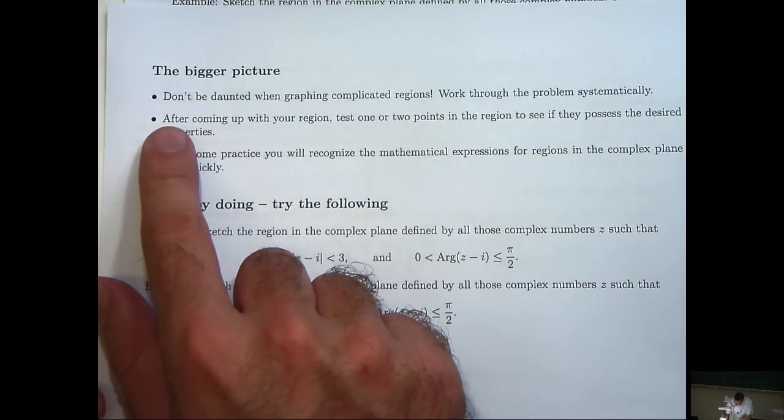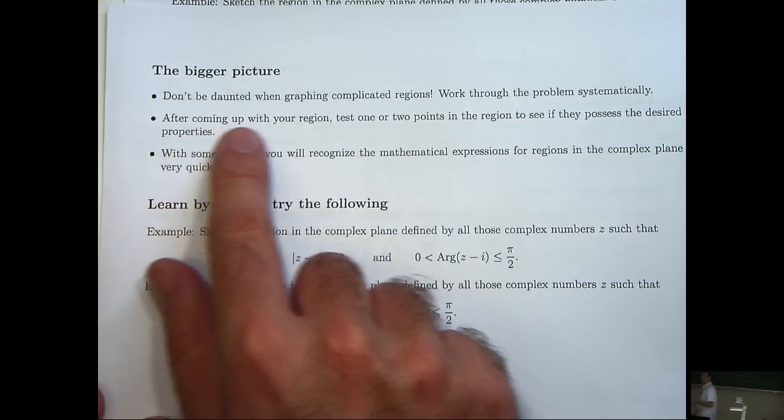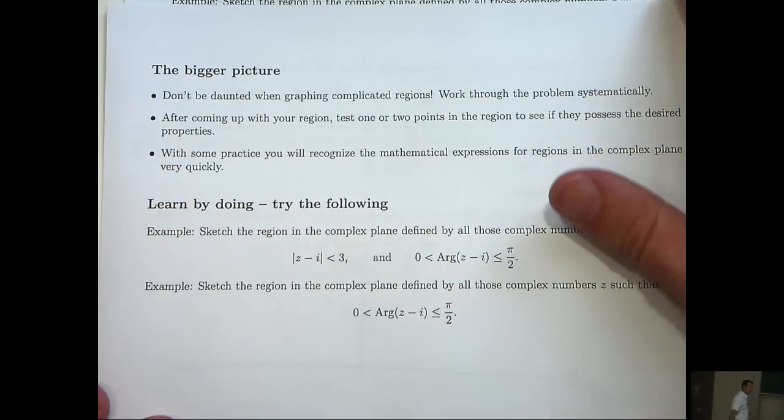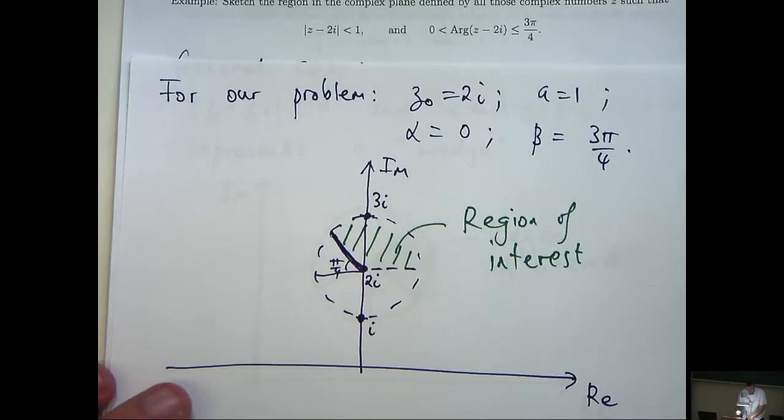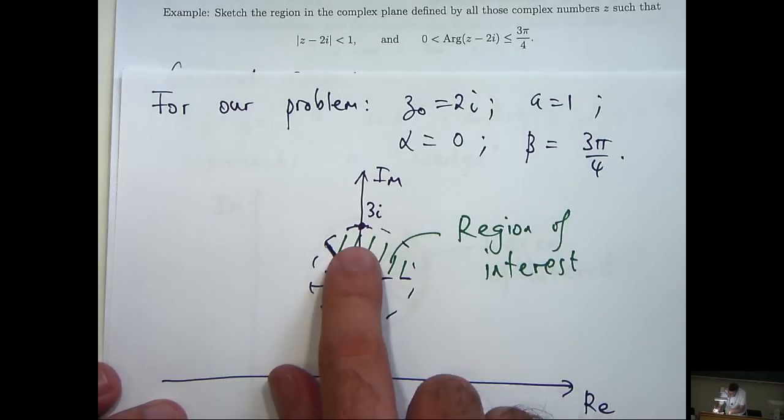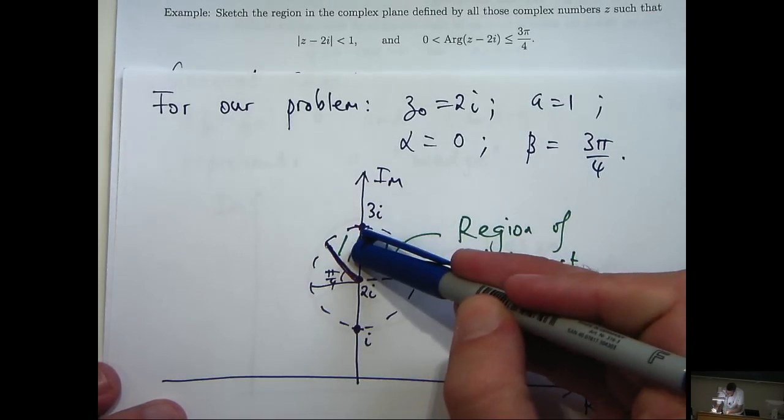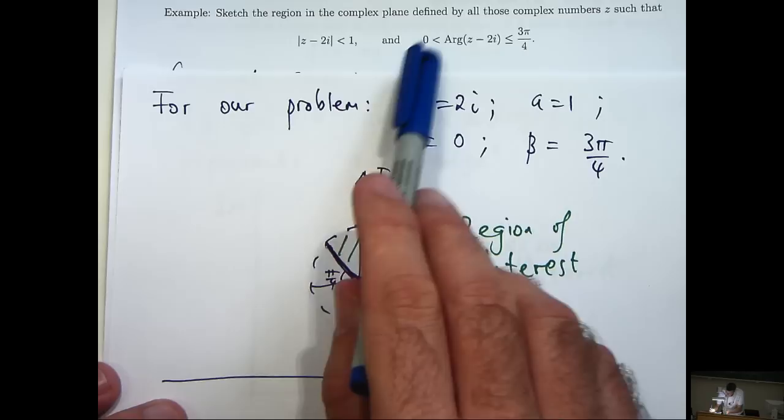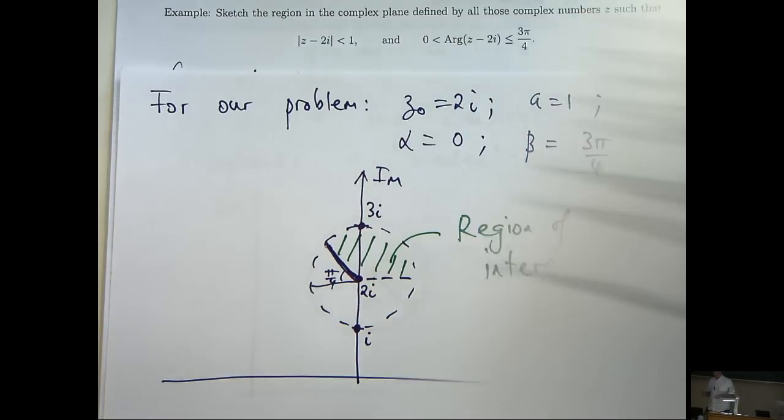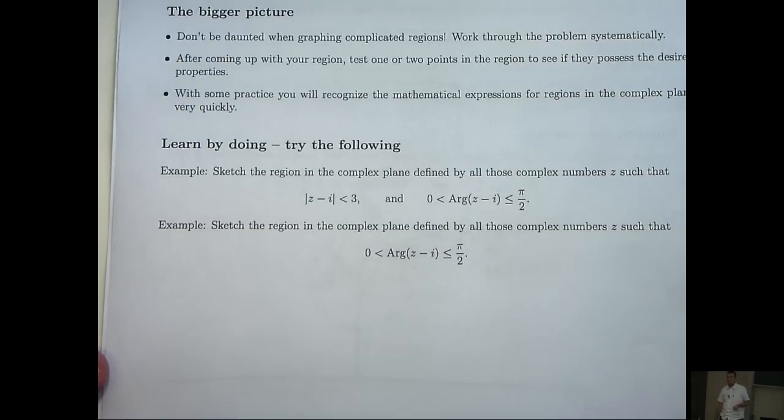Now a good idea, if you have time, is after you come up with your region, test one or two points in the region to see if they possess the desired property. So for example, I could choose the point, say, 2 and a half i, which just lies there, and then test these inequalities to see if they hold, just as a backup.